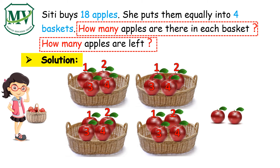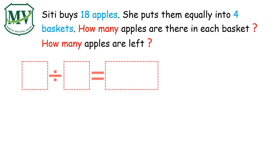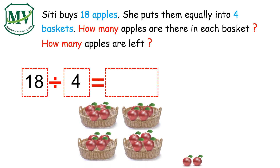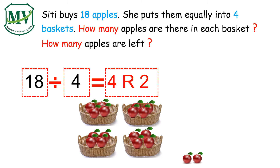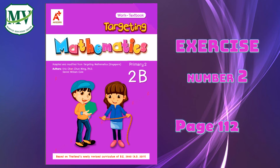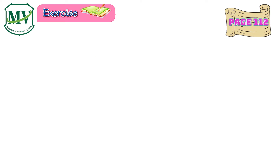How about the second question: how many apples are left? Yes, there are two apples left. We can also write: 18 divided by 4 is equal to 4 remainder 2. Now let us answer your book in Exercise Number 2, page 112, Exercise Number 2, Letter D.